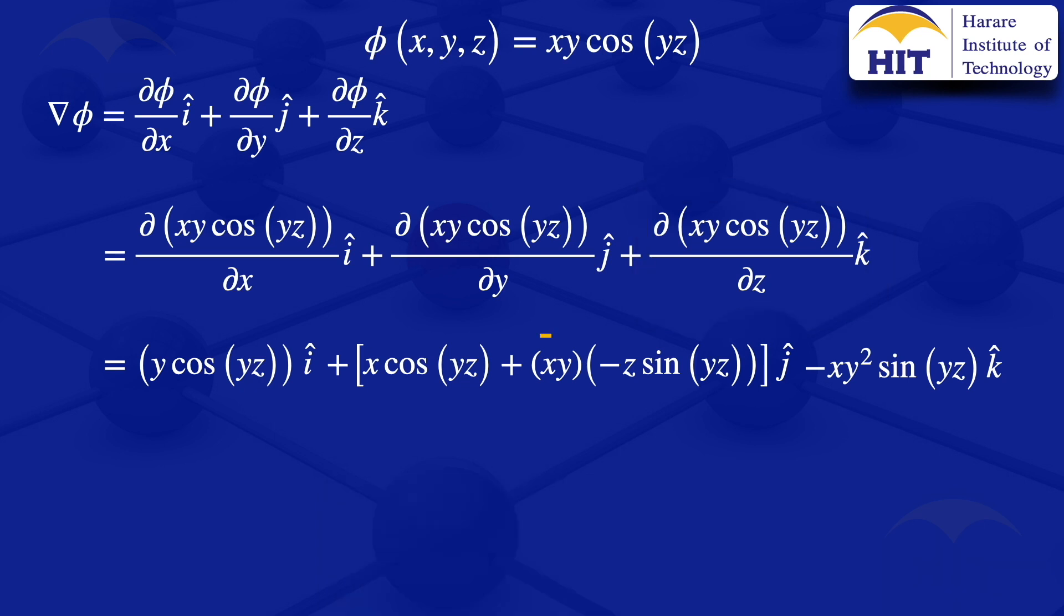But I can now go on and look at this part here. That product x times y times minus z will just simplify to minus xyz. So I'll write the first component there, the one with the i as it is. Then the second part there we are saying it now changes to x cosine of yz minus xyz sine of yz j. And then the part with the k is not changing so I write it as it is minus xy squared sine of yz k. So what we are having there, that's the gradient of the given function.